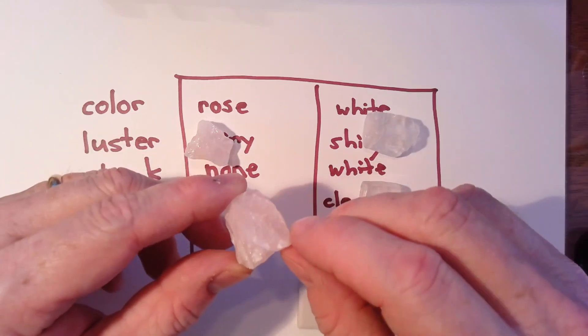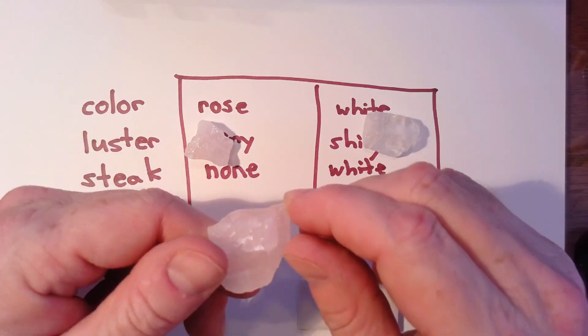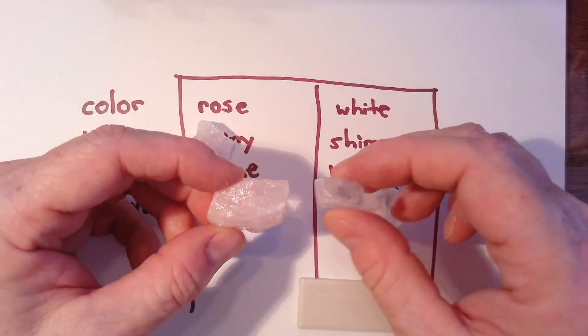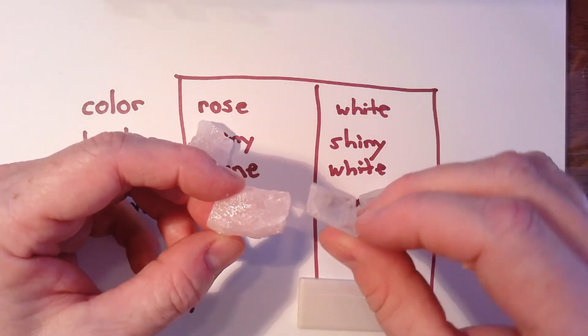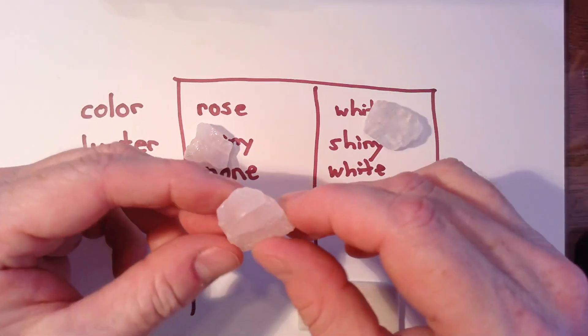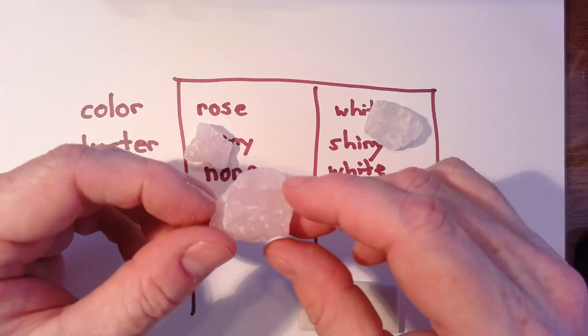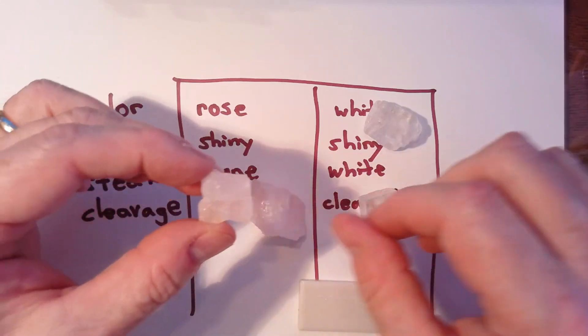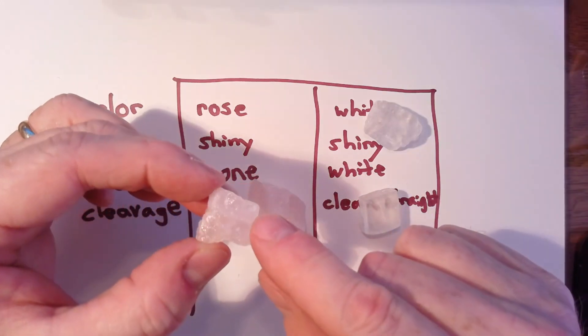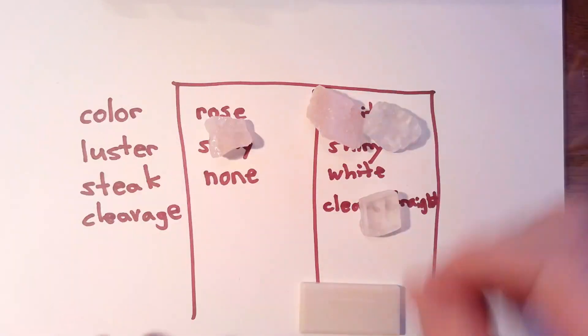The shiny rose on the left — when we look at that, it kind of has some straight edges to it, but definitely not the very flat sides we see on the white piece. This one has more of a rough cleavage. It looks like it does break apart along some lines, but it's not clean — that's much more of a rough cleavage.